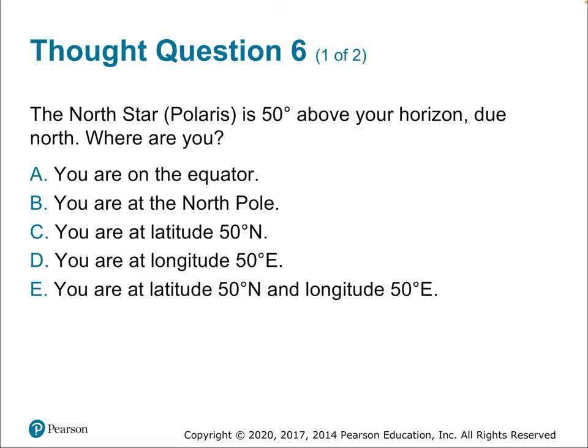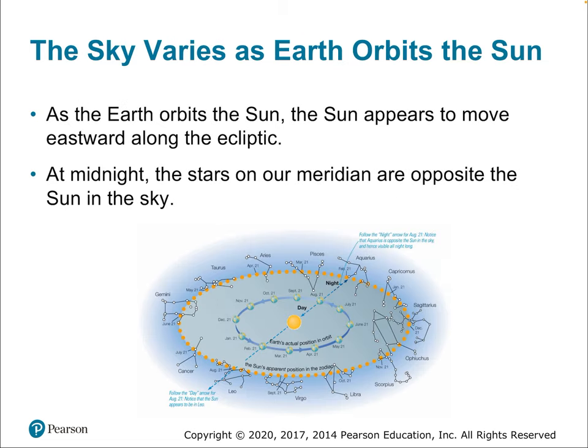Thought question six: Polaris is 50 degrees above your horizon due north — where are you? Using the rule that the altitude of the celestial pole equals your latitude, you're at 50 degrees north latitude — somewhere in the northern hemisphere, like Canada.